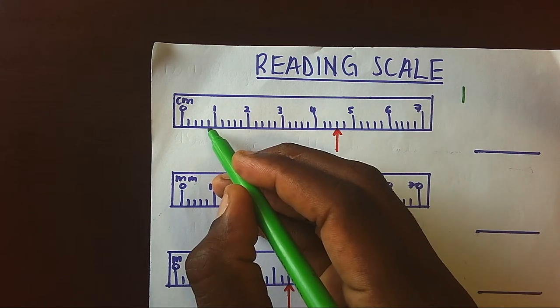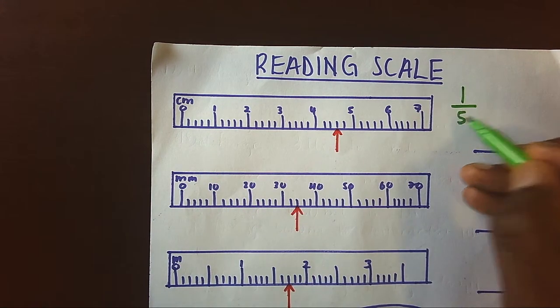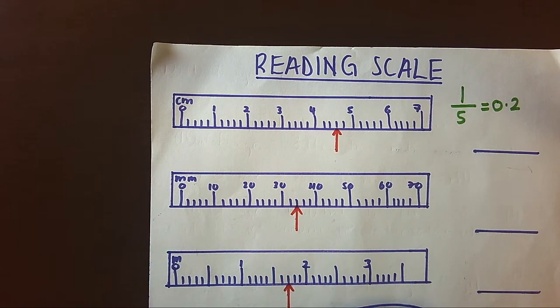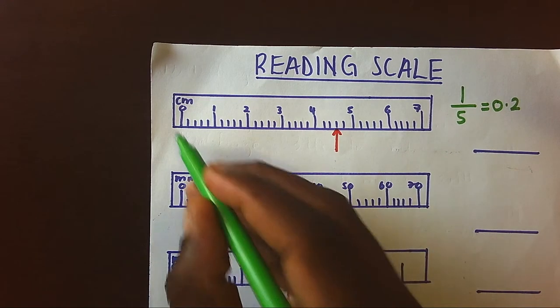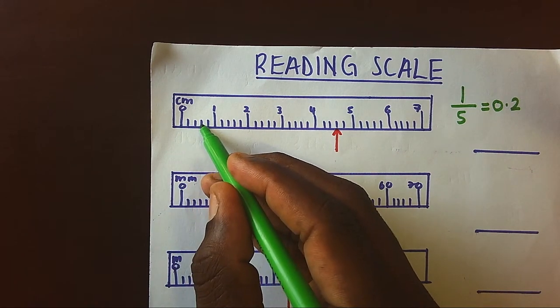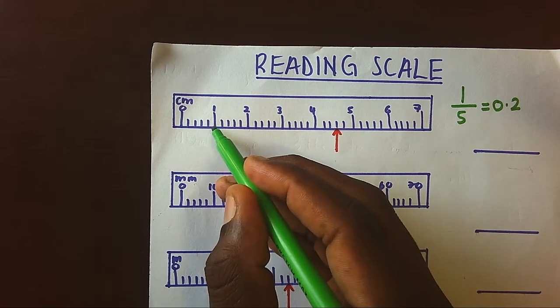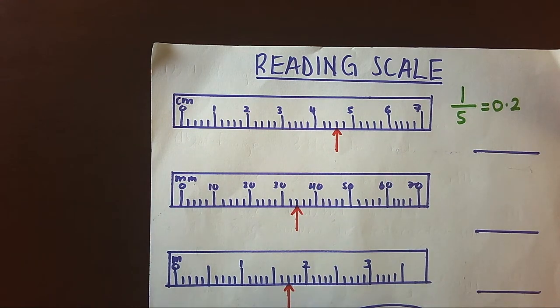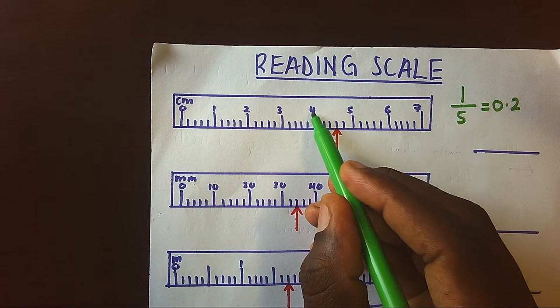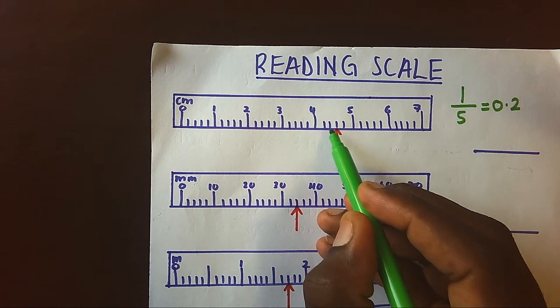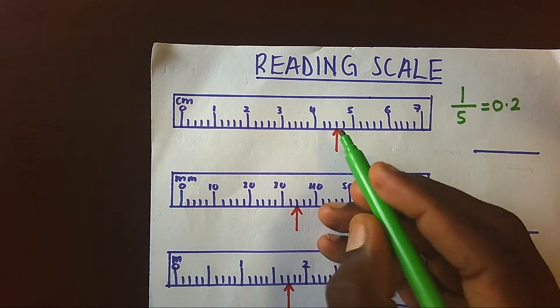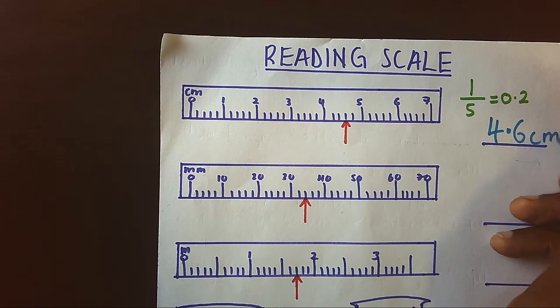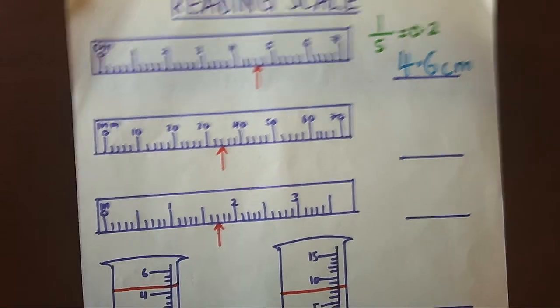If we divide by five, this will mean on each space we have 0.2. This will mean 0.2, 0.4, 0.6, 0.8 to one. The red arrow is showing our pointer, that's the reading we're interested in. This means it will be 4.2, 4.6, and our reading will be 4.6 centimeters.